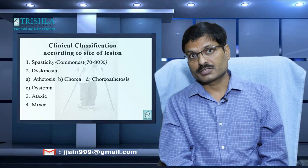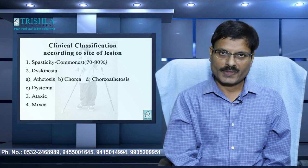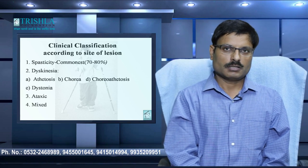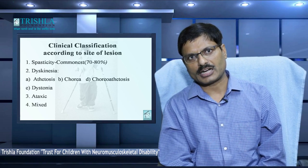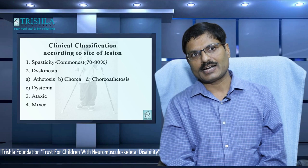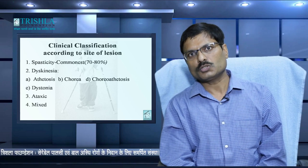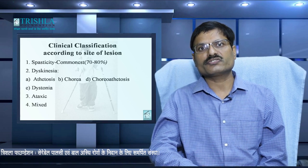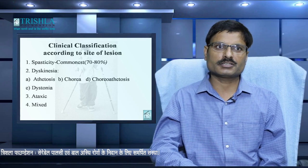Now we would like to discuss the types of cerebral palsy — how they present and what problems they have. Cerebral palsy children have movement disorder and different types of tone patterns. Because of this they can present in four varieties. The first is spastic variety — the commonest, presenting in 70 to 80% of children. The second variety is dyskinesia — different varieties like athetosis, chorea, chorea-athetosis, and dystonia. Third is ataxic variety, and fourth is mixed variety, where two different types of cerebral palsy are present. The most common combination is dystonic with spasticity.